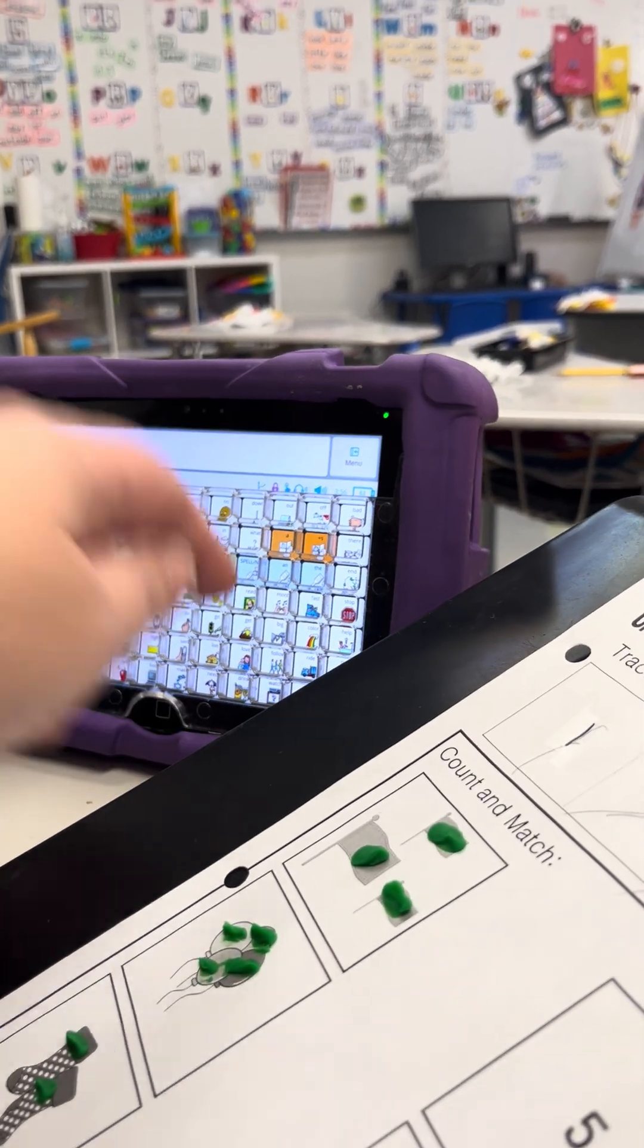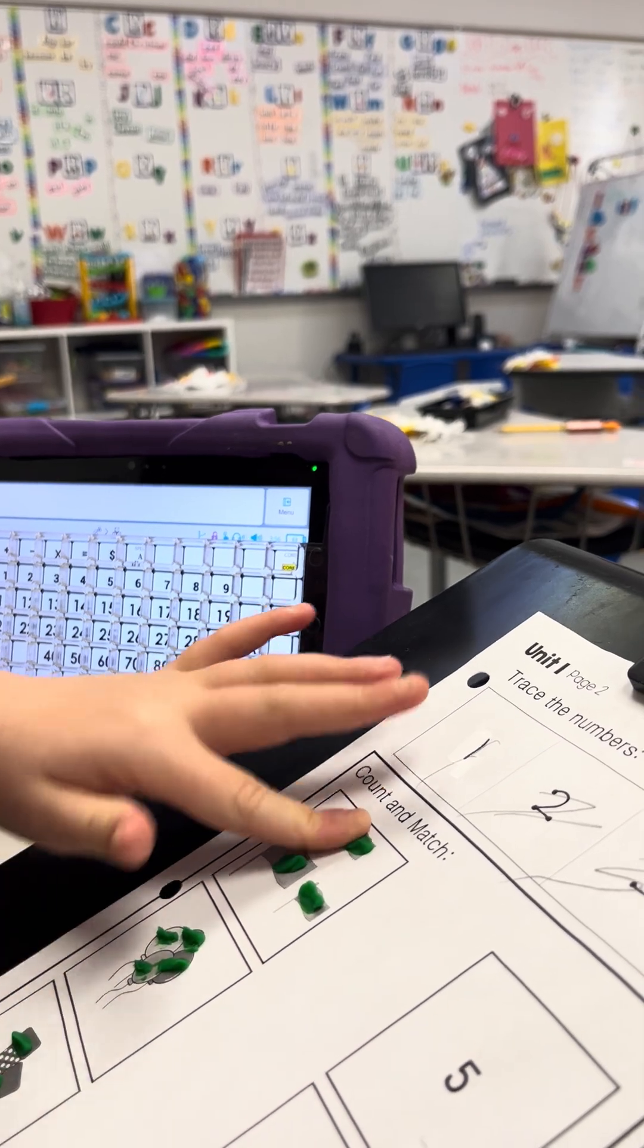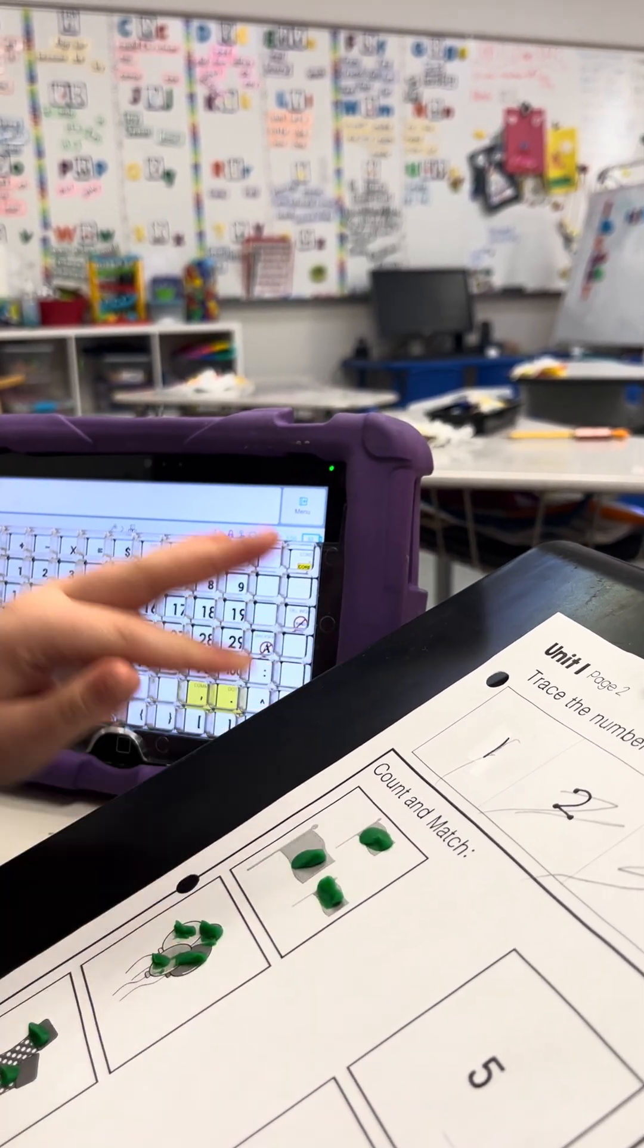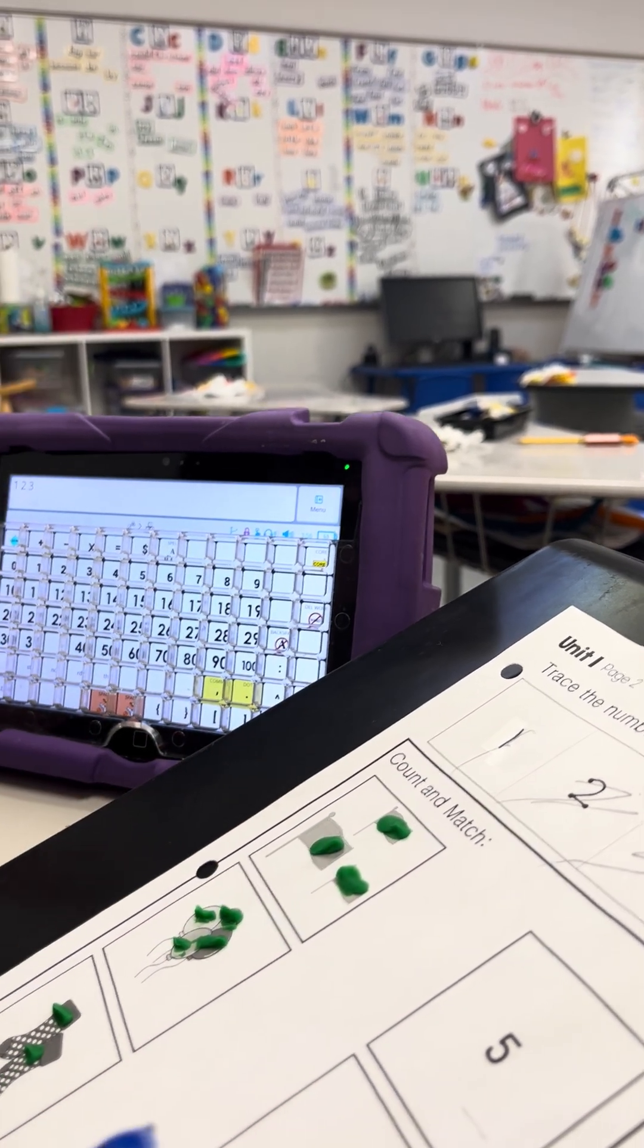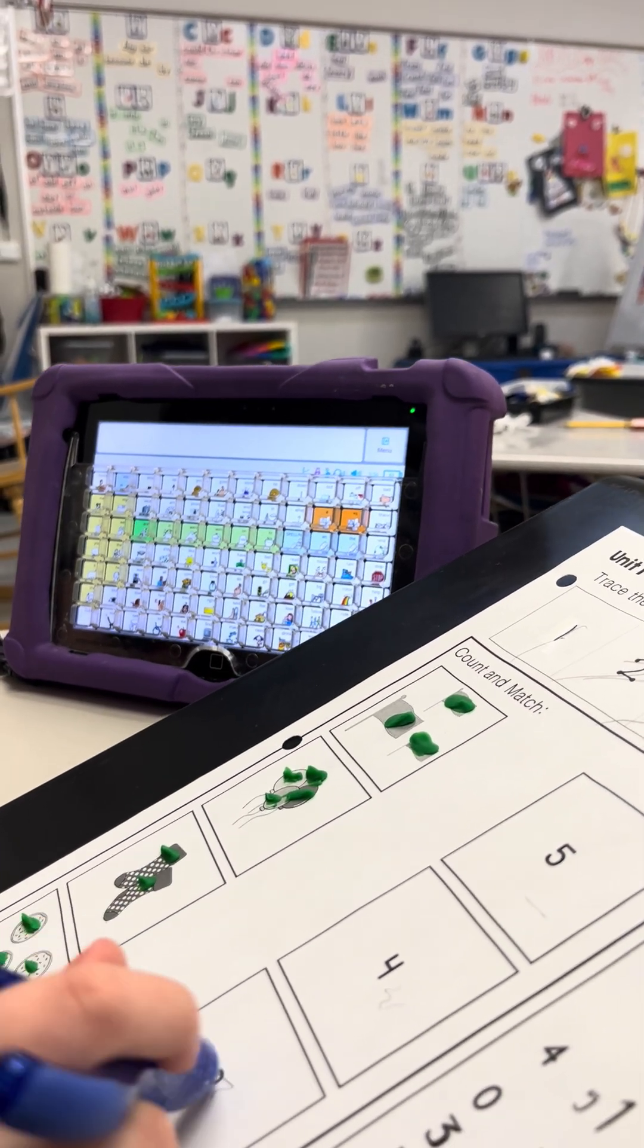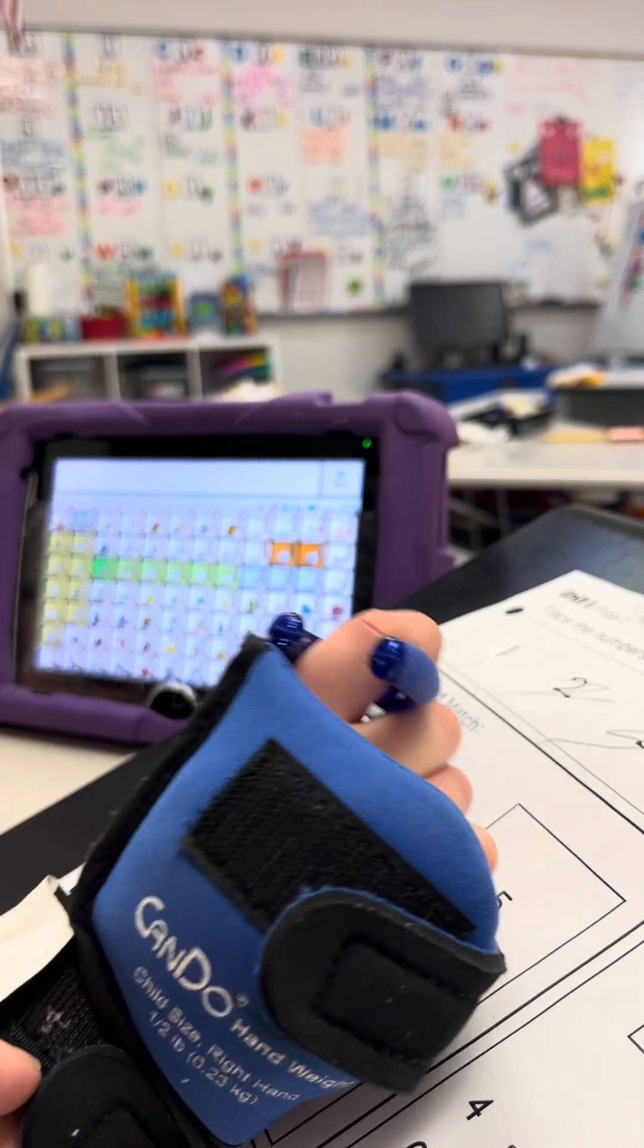On your keyboard, can you go to your numbers? Very good. Now I want you to touch and then count. One, two, three. And then you can stop. So we have three. Now you have to find the number three and draw a line to the flags. Very good.